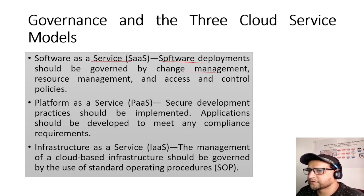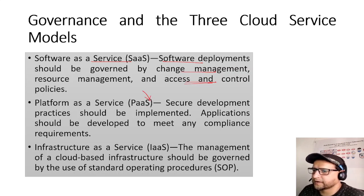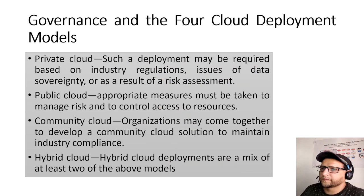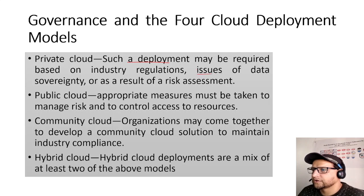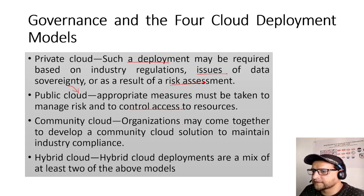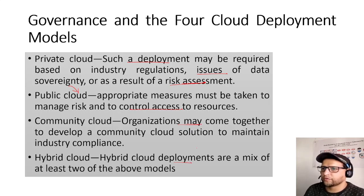Governance and service models: SaaS — deployment should be governed by change management, resource management, and access control policies. PaaS — secure development practices should be implemented and applications developed to meet compliance requirements. IaaS — management of cloud-based infrastructure should be governed by standard operating procedures. For deployment models: private cloud may be required by industry regulation or risk assessment; public cloud requires appropriate measures to manage risk and control access; community cloud lets organizations come together to maintain industry compliance; hybrid is a mix of two or more models.